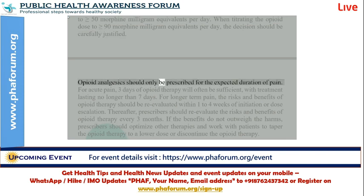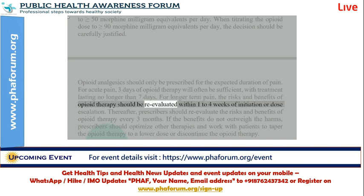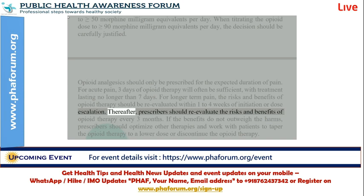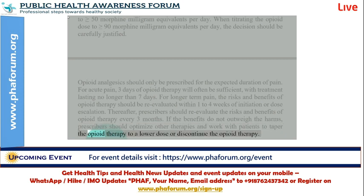Opioid analgesics should only be prescribed for the expected duration of pain. For acute pain, three days of opioid therapy will often be sufficient, with treatment lasting no longer than seven days. For longer-term pain, the risks and benefits of opioid therapy should be re-evaluated within one to four weeks of initiation or dose escalation. Thereafter, prescribers should re-evaluate risks and benefits every three months. If the benefits do not outweigh the harms, prescribers should optimize other therapies and work with patients to taper or discontinue the opioid therapy.